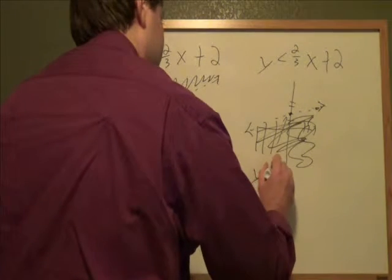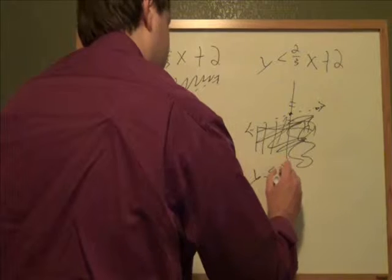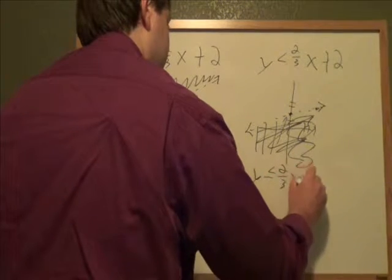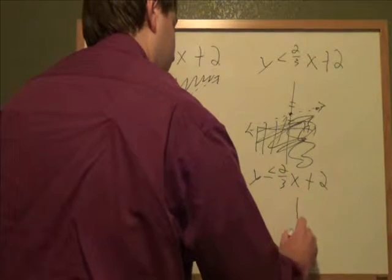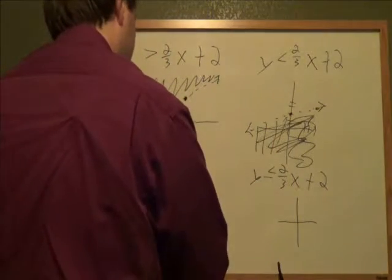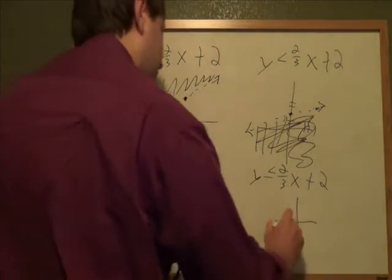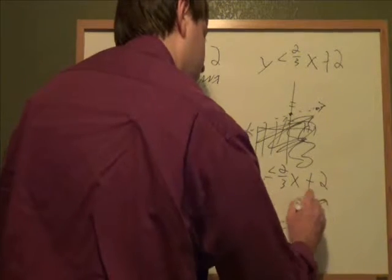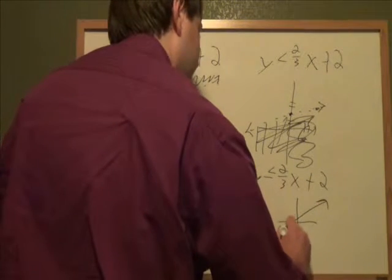Last of all, if you have y is less than or equal to 2/3x plus 2, that goes the same way. Because this has an or equal to, you have a solid line. And then a less than means you shade under it.